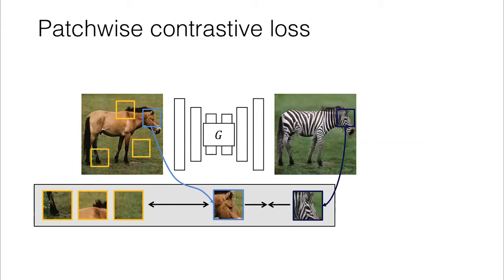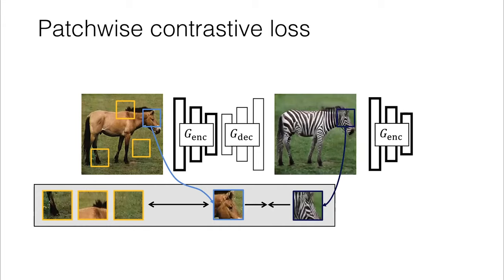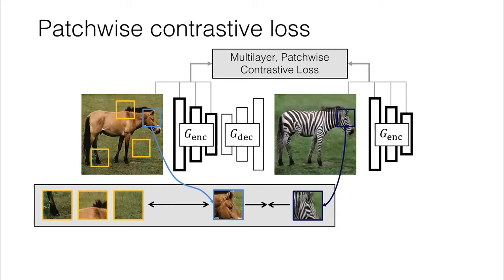A bit about how we code this. We don't literally take crops of patches and put them through the network. We have something more efficient. What we can do is take the generator and break it up into an encoder and decoder, and reuse the encoder and run it on the zebra. We can take activations at intermediate layers of the encoders on the horses and zebras. If you go deeper into the network and take an activation, that actually corresponds to a larger patch in the image. If you use a shallower layer, you're using effectively a smaller patch. Different spatial locations within the activations correspond to different spatial locations for the patches. So we end up applying this in a multilayer patchwise fashion.